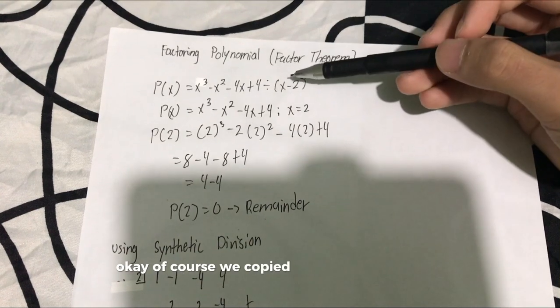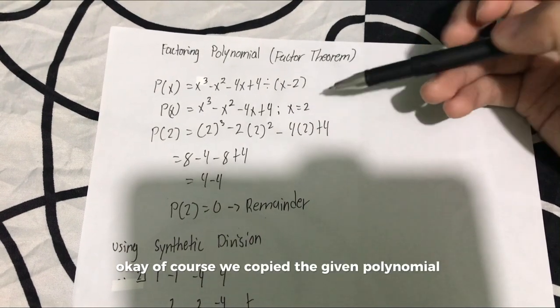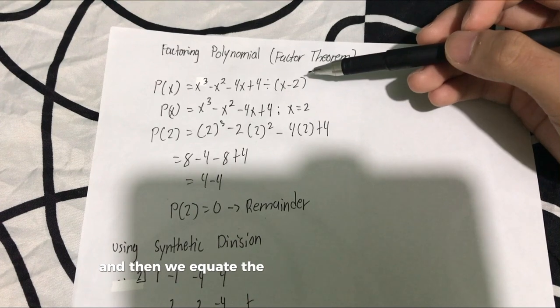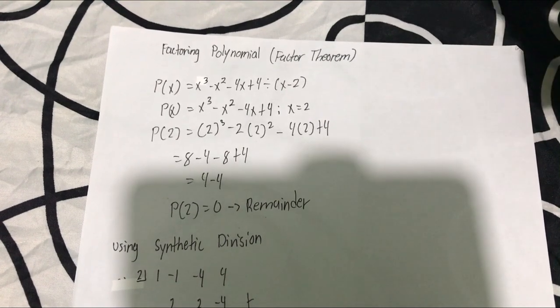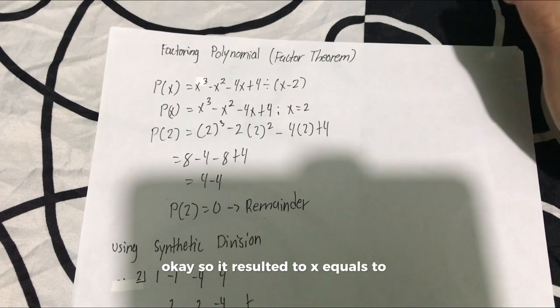We copied the given polynomial and then we equate the given divisor x minus 2 to 0. So it resulted to x equals 2.